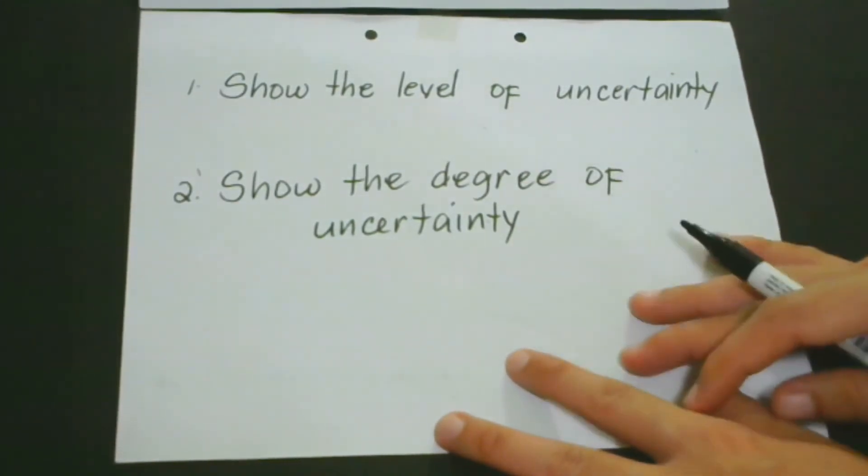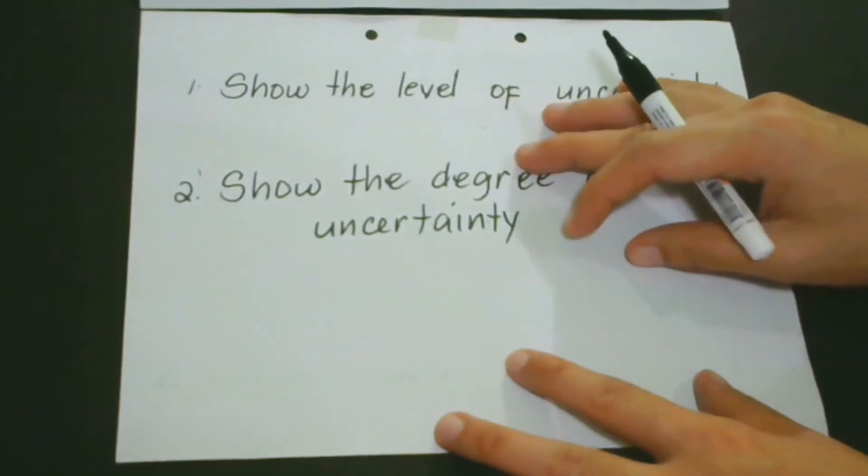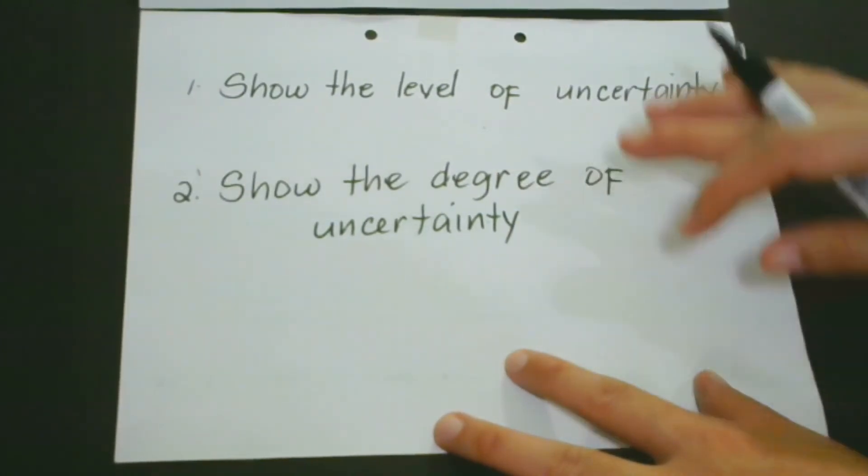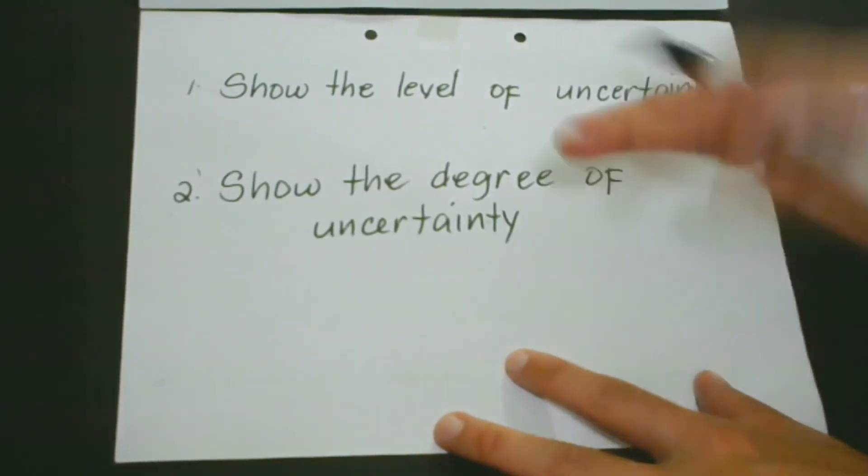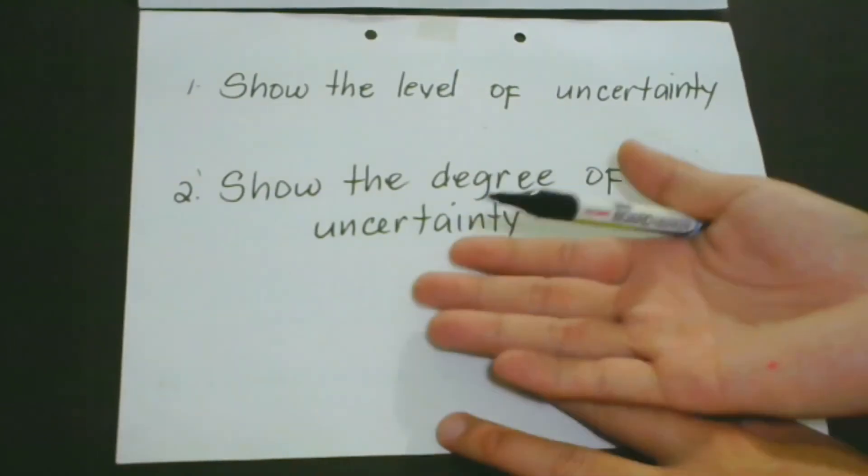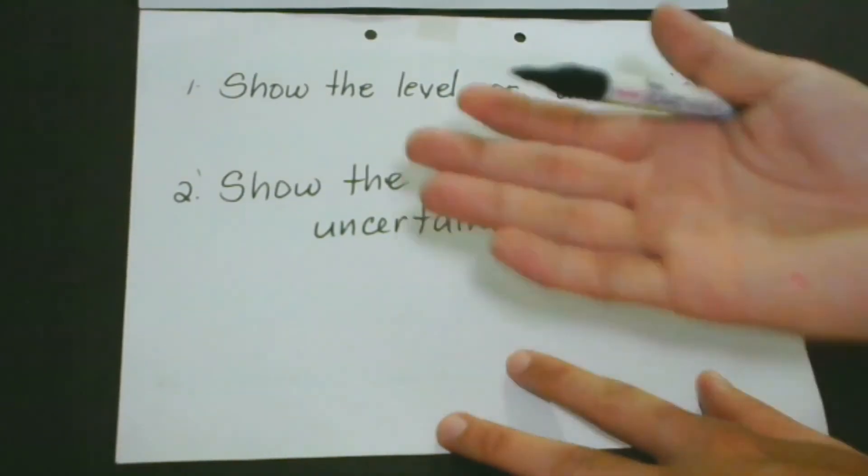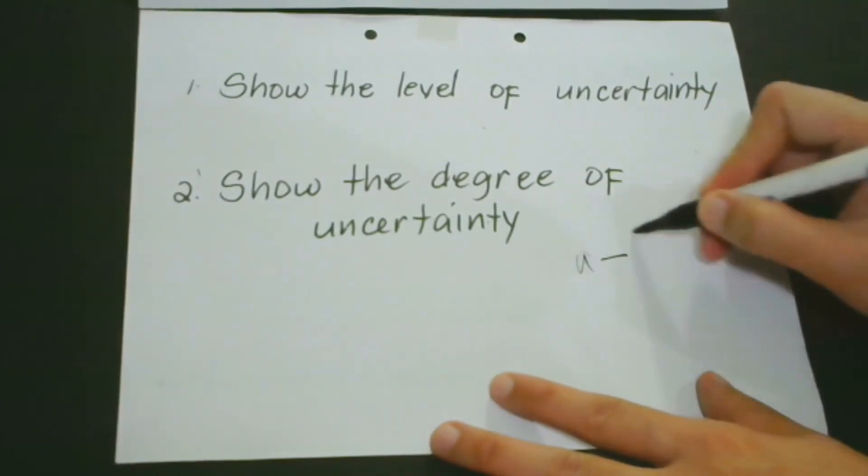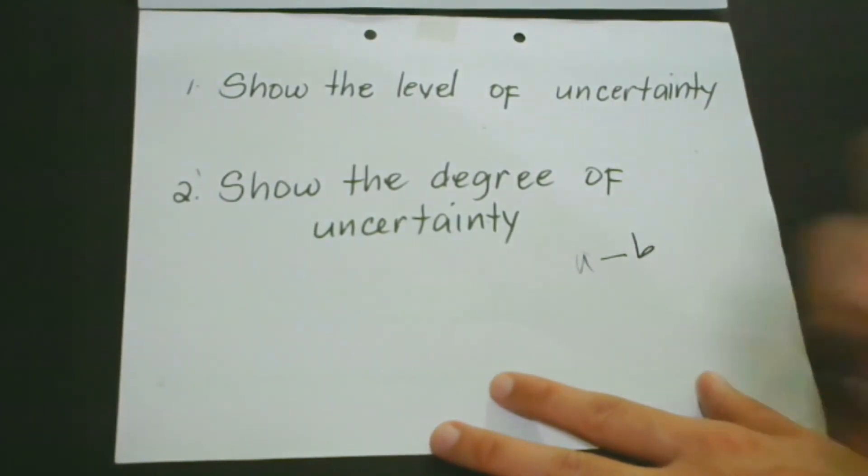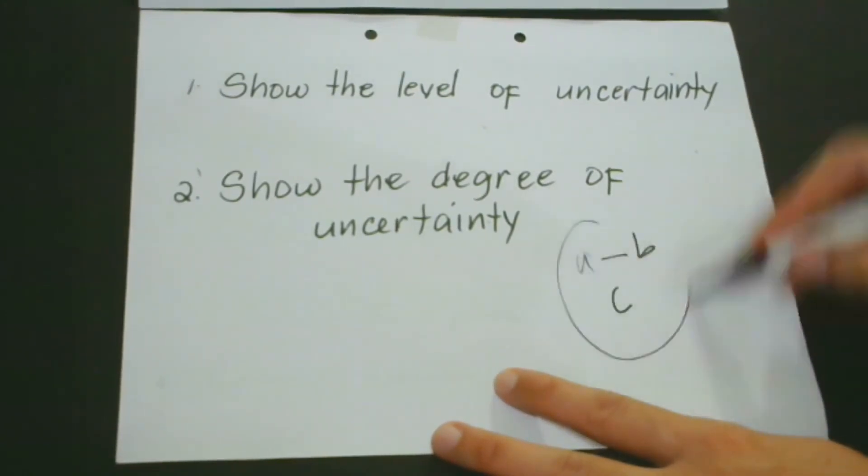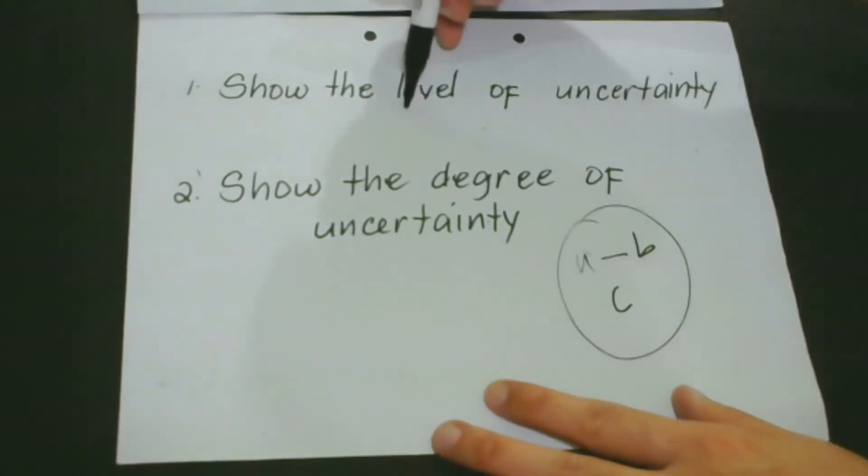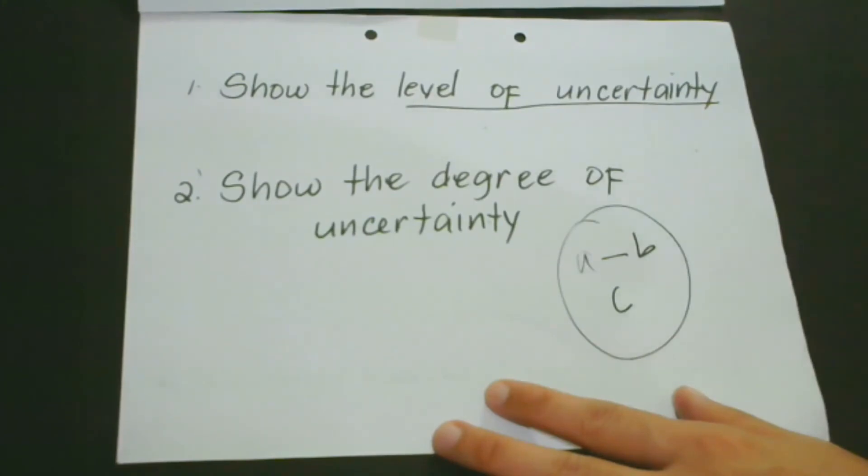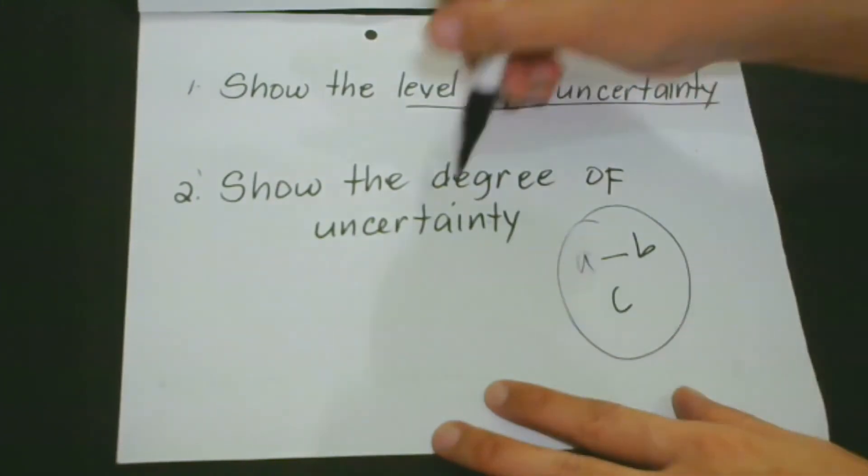The second one is that it permits us to show the degree of uncertainty in our predictions. Just like, for example, when we say that we believe that the sales performance is going to be between A and B, rather than just saying the sales performance would be exactly C. Our model can help us do that again. It has something to do with the level of uncertainty and it has something to do with the degree of uncertainty.